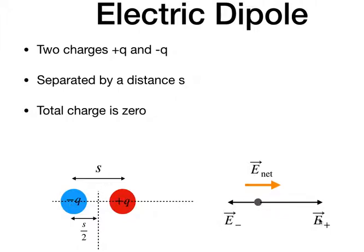The electric field due to the positive charge E+ has a larger arrow because the positive charge is closer to the point of interest — that distance is R minus s over 2. The negative charge has a larger distance: R plus s over 2. So they have different magnitudes and directions of electric field, and we add those together.